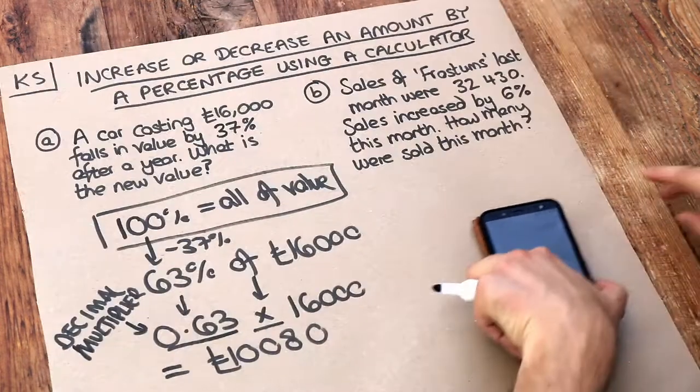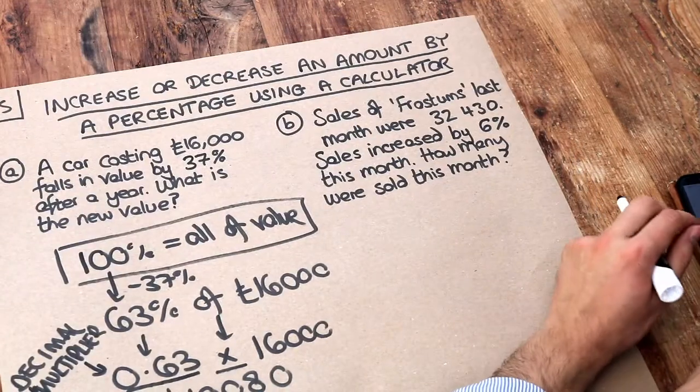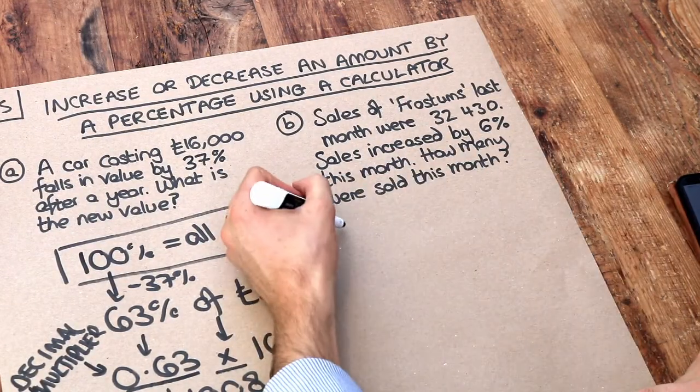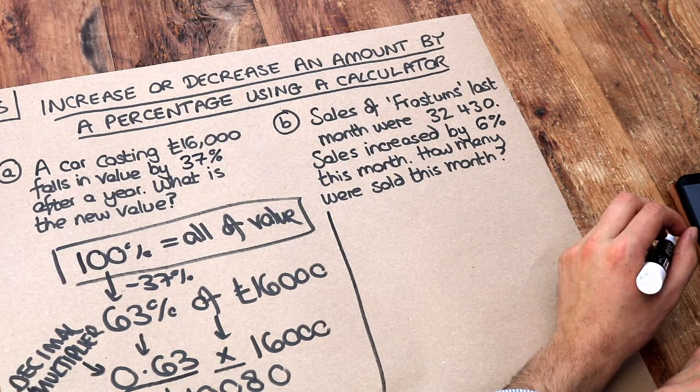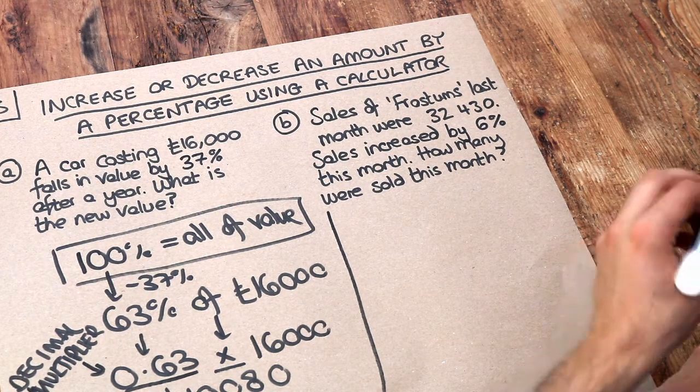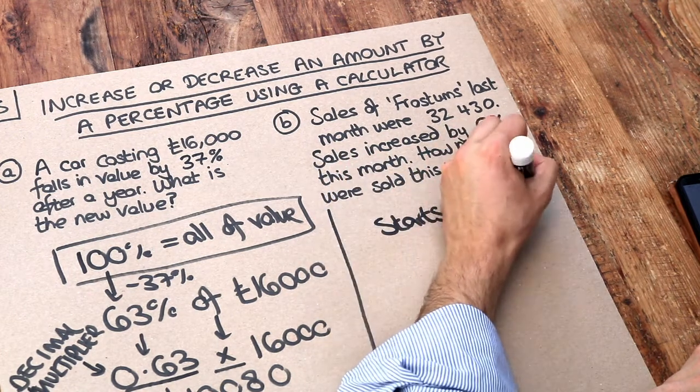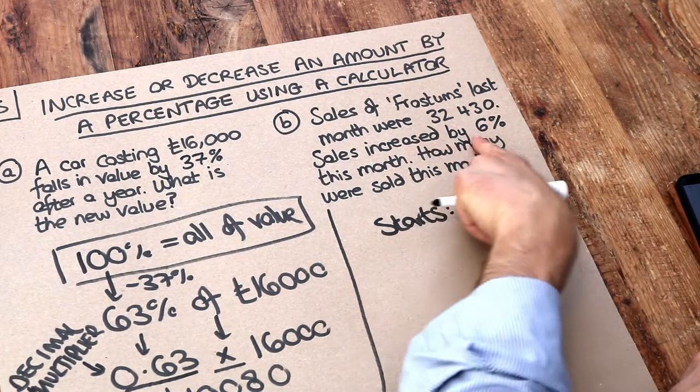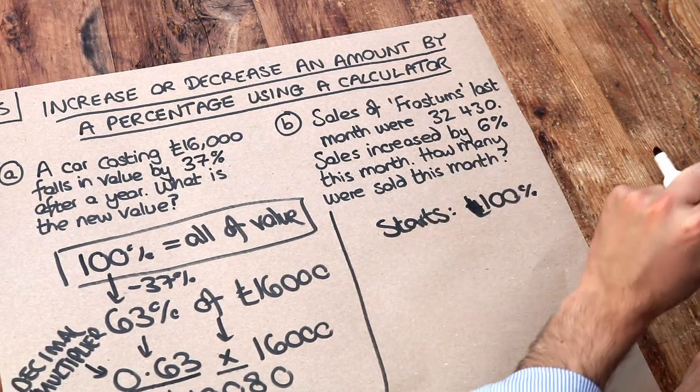Let's do it for this second one. Sales in Frostums last month were 32,430. Sales increased by 6% this month. How many were sold this month? Now remember everything starts at 100% so it starts at 100% of its value. Now sales increased by 6% so now we're up to 106%.